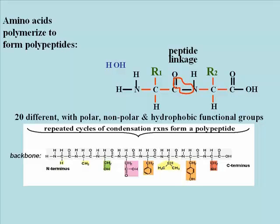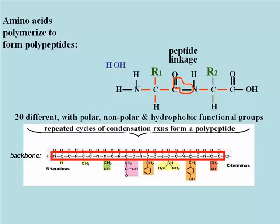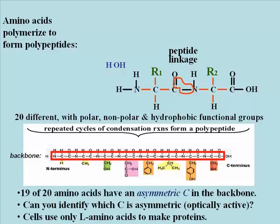Polypeptides have an amino, or N-terminus, and a carboxyl, or C-terminus. The N-C-C repeat, highlighted here in the chain, is called the polypeptide backbone. Of the 20 amino acids, 19 have optically active carbons in the backbone. Can you identify which carbon is optically active in each of the amino acids? These 19 optically active amino acids exist in either L or D forms, standing for levorotary or dextrorotary, and cells use only the L amino acids to make proteins.